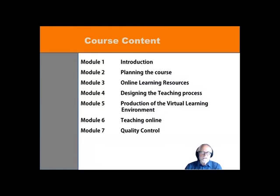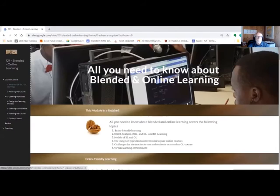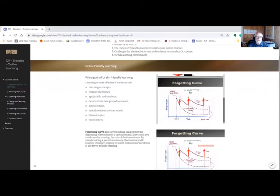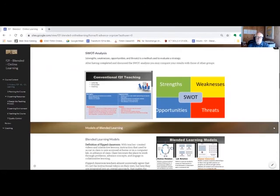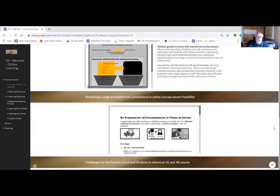Let's have a quick look at the content of the course. The course consists of seven modules. The first chapter is a kind of introduction. It provides the basics regarding teaching and learning in a blended and in an open learning context. We discuss the requirements of brain-friendly learning and compare blended learning, online learning, and face-to-face learning. We will distinguish different models of online and blended learning, and teachers and learners will talk about the challenges of online learning.